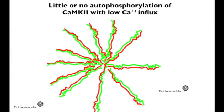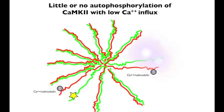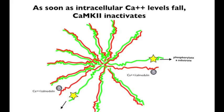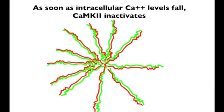To complete the story, we consider why there is little or no autophosphorylation of CAM kinase 2 when there is a low influx of calcium. With low calcium signals, it is unlikely that the calcium-activated calmodulin will bind to neighboring subunits. Under these conditions, one or two subunits will be opened and their S-sites activated. However, neighboring subunits will be closed and thus cannot be autophosphorylated. As soon as intracellular calcium levels fall, the subunits close and the CAM kinase 2 molecule inactivates.